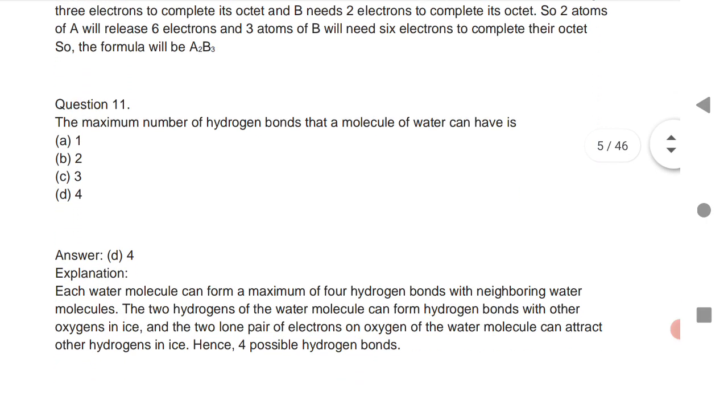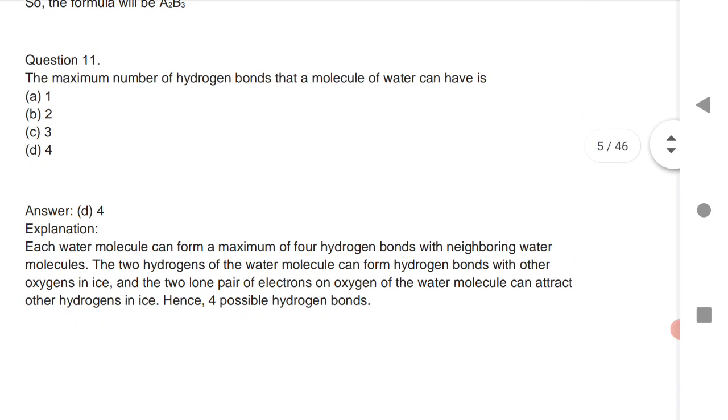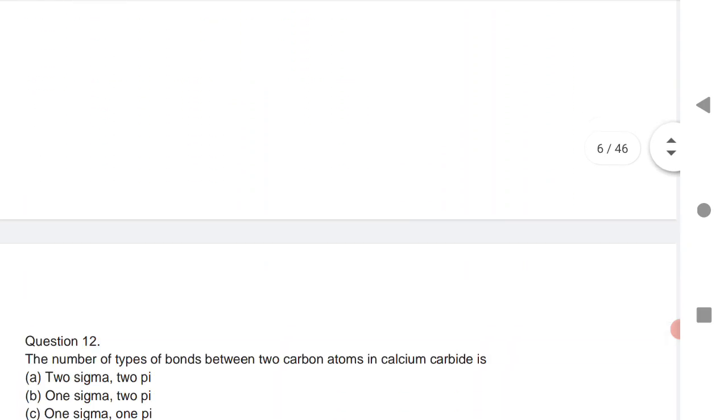Maximum number of hydrogen bonds a molecule of water can have is four. Very important question.